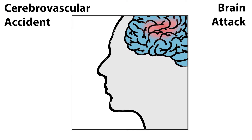A stroke is a medical emergency that occurs when the blood flow to the brain is interrupted. A stroke is often called a CVA or cerebrovascular accident. However, a stroke is usually caused by an underlying disorder and is therefore no accident. More recently, the term brain attack is used due to the similarities between a stroke and a heart attack.